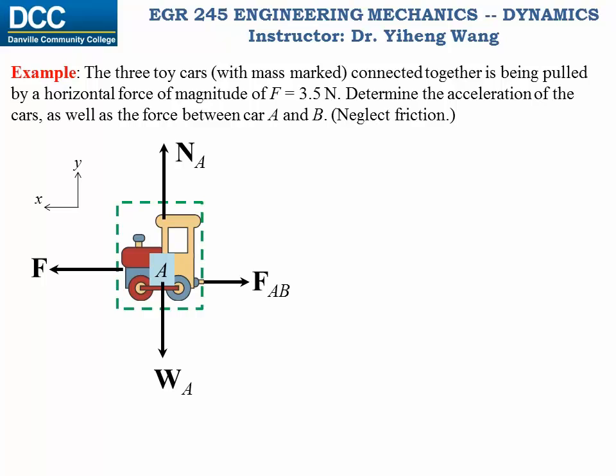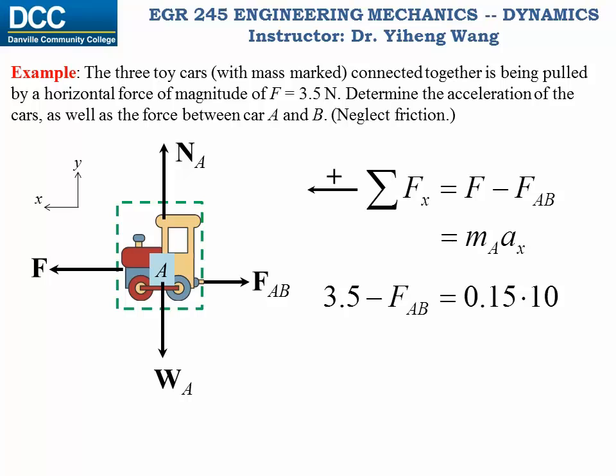And then we write the equation of motion on car A only. The resultant force acting in the positive x direction equals F minus FAB, and that equals the mass of car A multiplied by the acceleration along the x direction, which we solved for during the previous step. So we substitute in the known values and solve for FAB to be 2 newton. And that completes this problem.